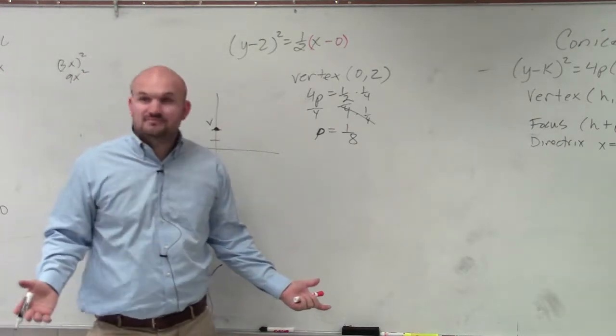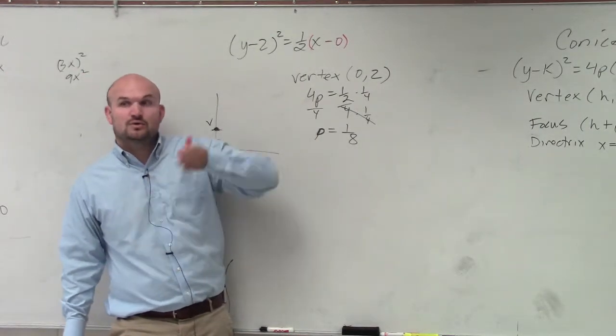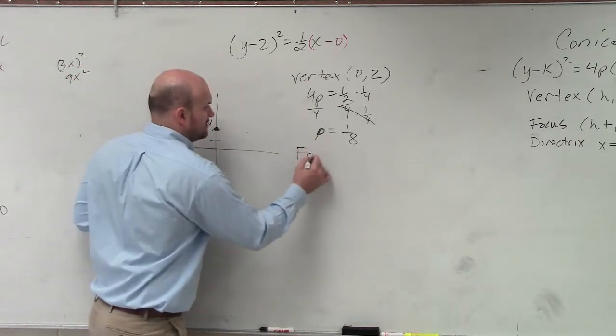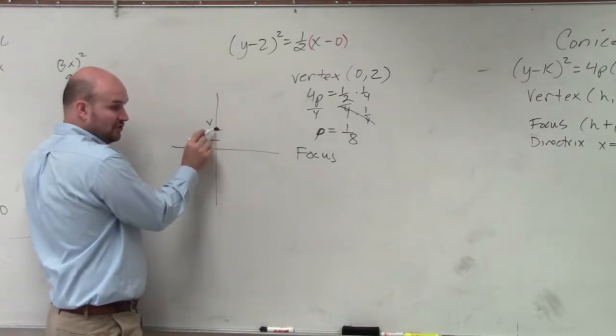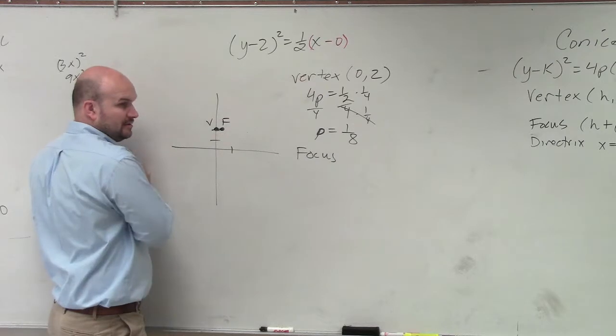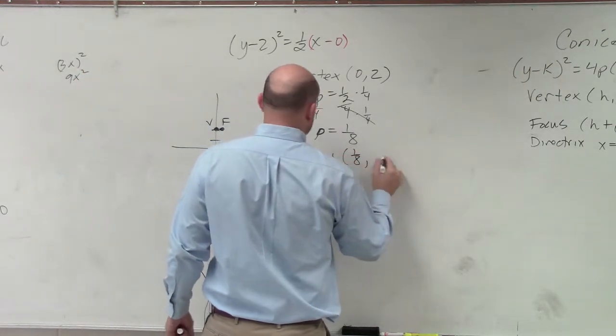Not very fun, but that's OK. We can handle this. p is 1/8, and that's going to the right. So my focus has a y value of 2, but it's just going over 1/8. So my point is going to be (1/8, 2). Does everybody see that?